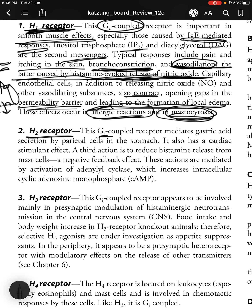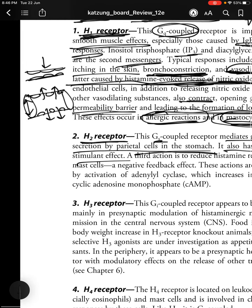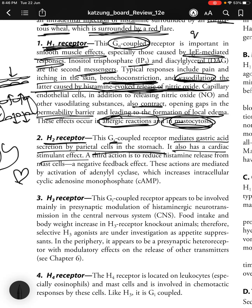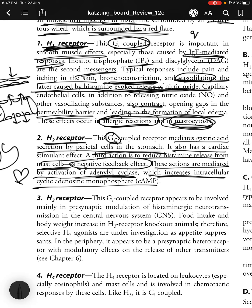H2 receptors are Gs-coupled and mediate gastric acid secretion by parietal cells in the stomach. They also have a cardiac stimulant effect and reduce histamine release from mast cells as a negative feedback. These actions are mediated by activation of adenylyl cyclase, increasing intracellular cAMP.